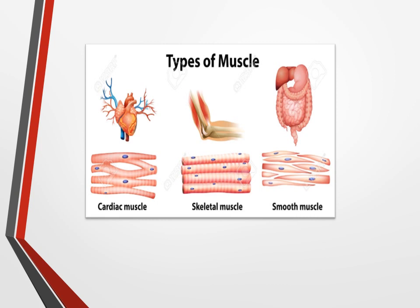All three types of muscles and their locations are shown in this figure. Cardiac muscles — their fibers and nuclei — are present in the wall of the heart. Skeletal muscles — their fibers and nuclei — are present in the arms, forelimbs, and hind limbs. Smooth muscles — their fibers and nuclei — are found in the intestine, as shown in this figure.